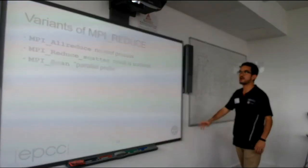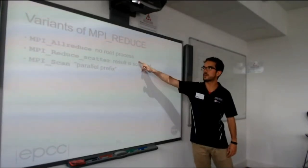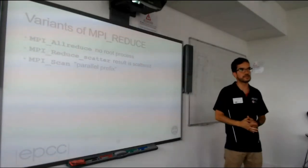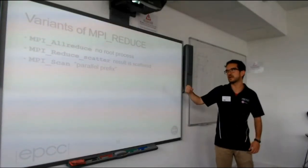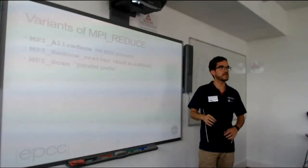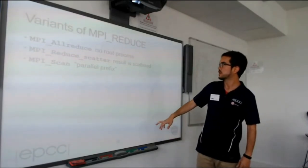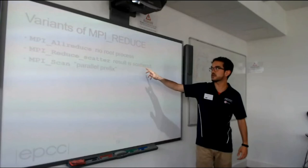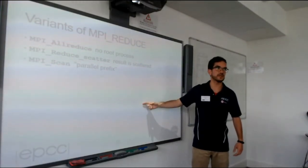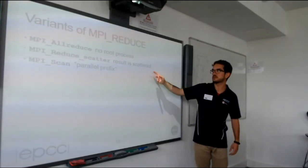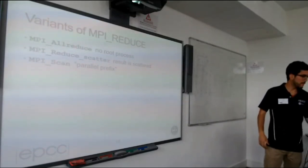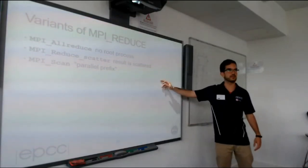We also have a variant called MPI_Allreduce, where there is no root process — the result of the reduction is saved in all processes. There is also MPI_Reduce_scatter, which performs the reduce and then scatters the results. And MPI_Scan, which we will see with an example.